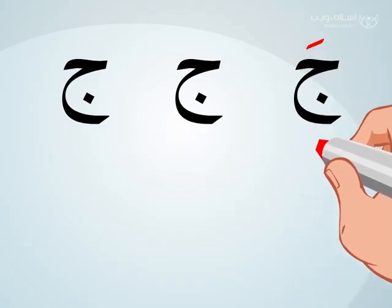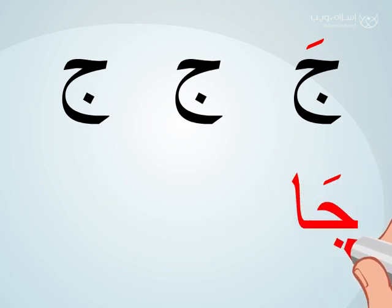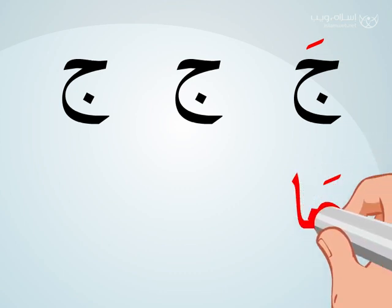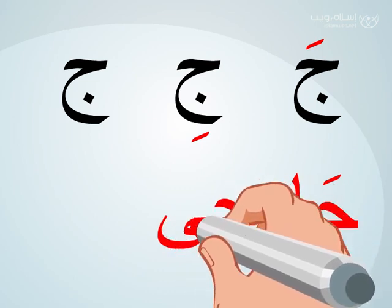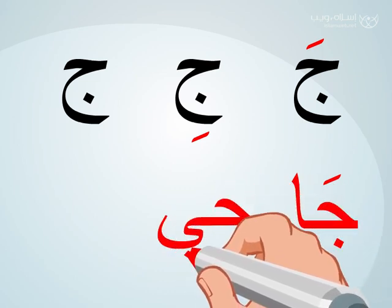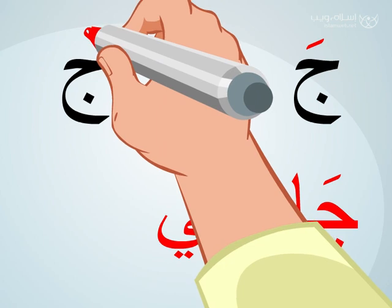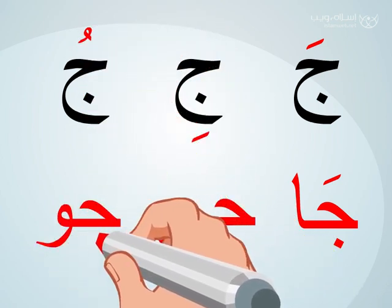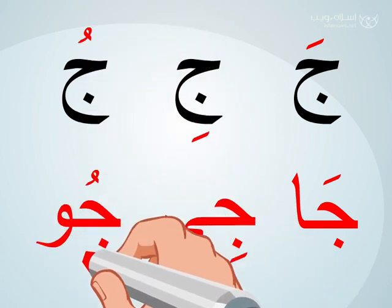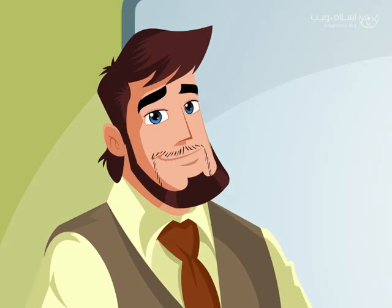The following letter: we write the Tha with Fatah and pronounce 'tha', then we add Mad Alif and pronounce 'thaa'. We write the Tha with Kasra and pronounce 'thi', then we add Mad Ya and pronounce 'thii'. We write the Tha with Dham and pronounce 'thu', then we add Mad Waw and pronounce 'thuu'.